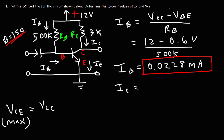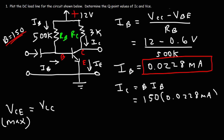IC is going to be beta times IB. Beta is 150, IB is 0.0228 milliamps, so the collector current is going to be 3.42 milliamps.